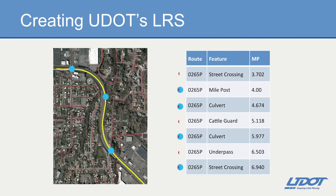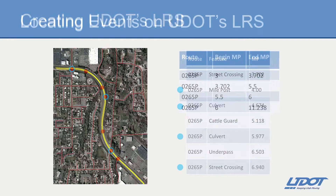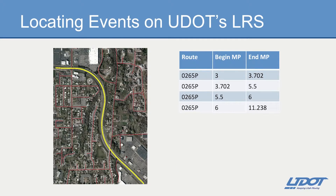Analysts can then plot roadway features on the LRS that have a known route and mile point value. The LRS is created with the goal of having all features fall within 50 feet of their actual location. In this same way, UDOT can then create linear events such as project boundaries.